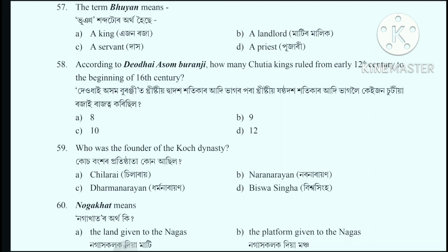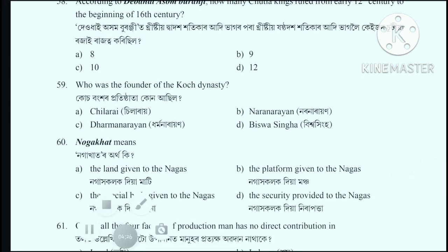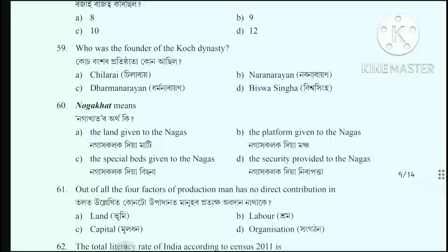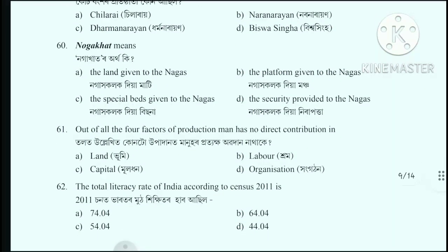Question number 59: Who was the founder of the Kush dynasty? The correct answer is option D: Vishwa Singha. He was present in the 2021 examination. Question number 60: Nagakhat means - the correct answer is option A: Naga Khakalak Diya Mati (land granted to Nagas).